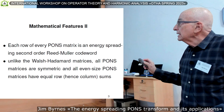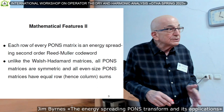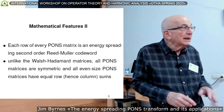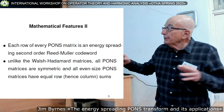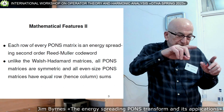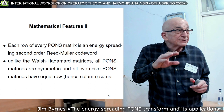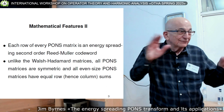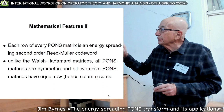It turns out you might know about Reed-Muller codes, a very important topic in digital signal processing. Each row of every PONS matrix is what we call an energy-spreading second-order Reed-Muller code. This is directly related to the Shapiro polynomials. Some of you might have heard of them as the Rudin-Shapiro polynomials, but that's a misnomer — and I can tell you exactly why if anyone's interested offline.